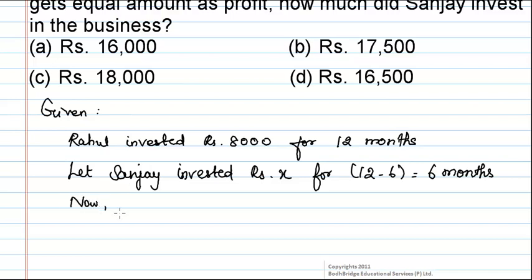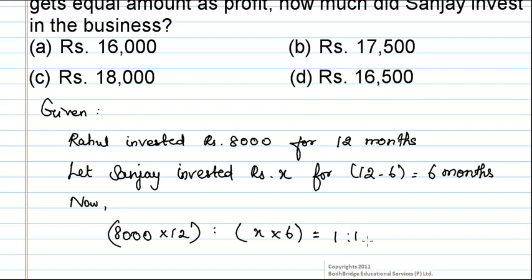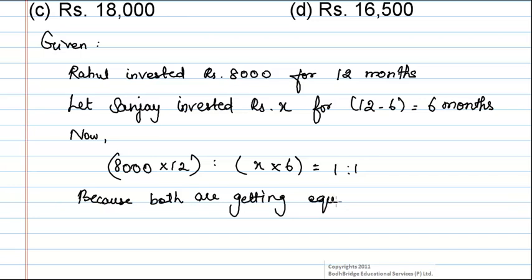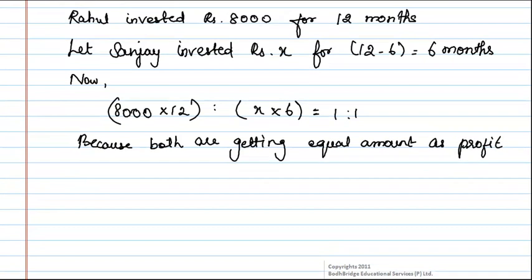We have 8,000 into 12 is to X into 6, equal to 1 is to 1, because both are getting equal amount as profit. Hence we have written 1 is to 1.